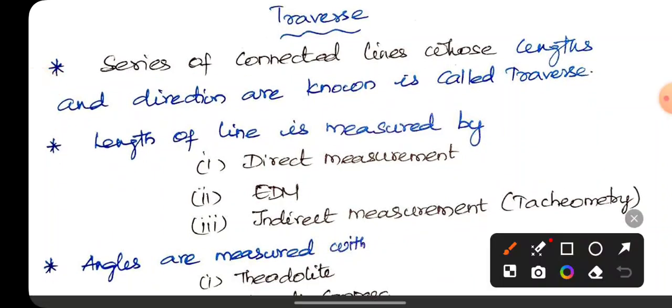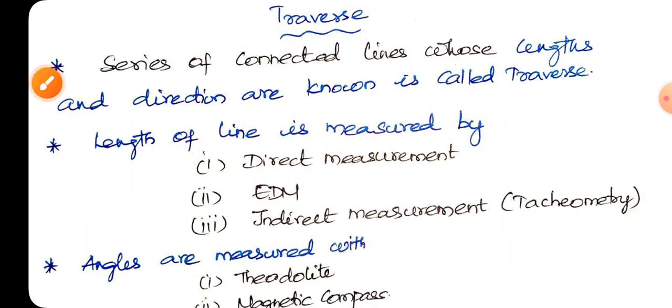In the Traverse lines, if you measure length, there is direct measurement. Tape chain is direct measurement, this is EDM. So electronic distance measurement, this is EDM. This is tachymetry measure length.